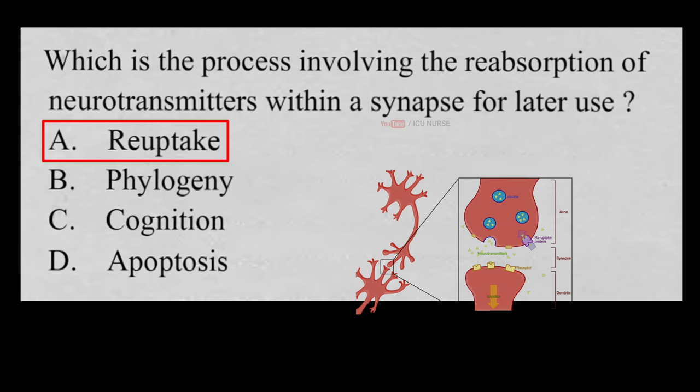Reuptake is the process by which neurotransmitter molecules that have been released at a synapse are reabsorbed by the presynaptic neuron that released them.